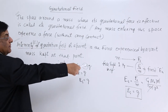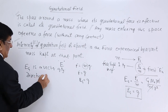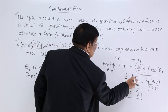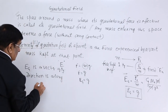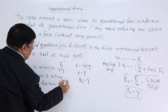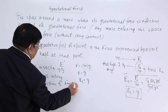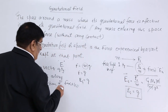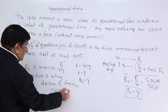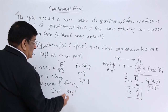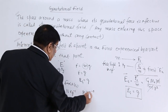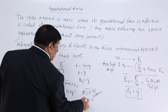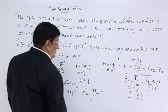What should be the direction of gravitational field? We have seen the magnitude; the direction is along the direction of the gravitational force. What should be its unit? Newton per kg. What should be its dimension? MLT minus 2 divided by M, giving LT minus 2. This is correct because it is numerically equal to acceleration, which has dimensions LT minus 2.